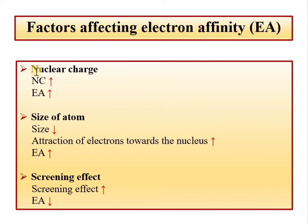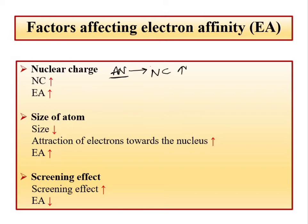The first factor we will look at is nuclear charge. As the nuclear charge of an element increases — and nuclear charge means atomic number, which means the number of protons — the nuclear charge will also increase. As nuclear charge increases, the positive charge on the nucleus increases, so the electron, which has a negative charge, will be attracted towards the nucleus, and electron affinity will also increase.